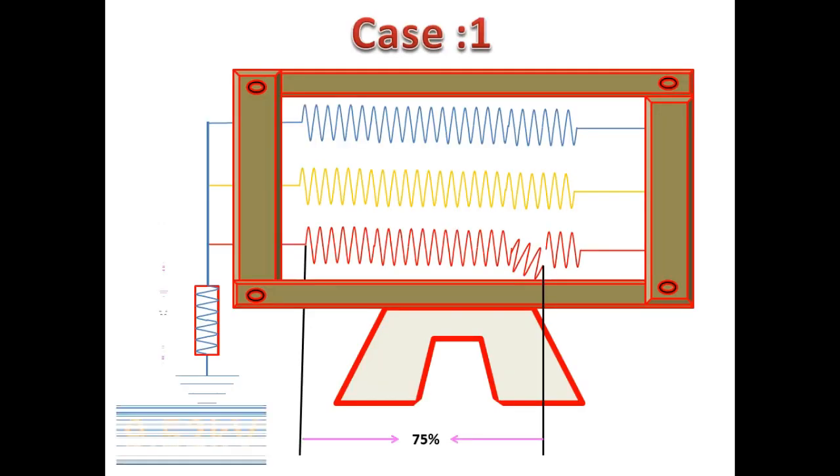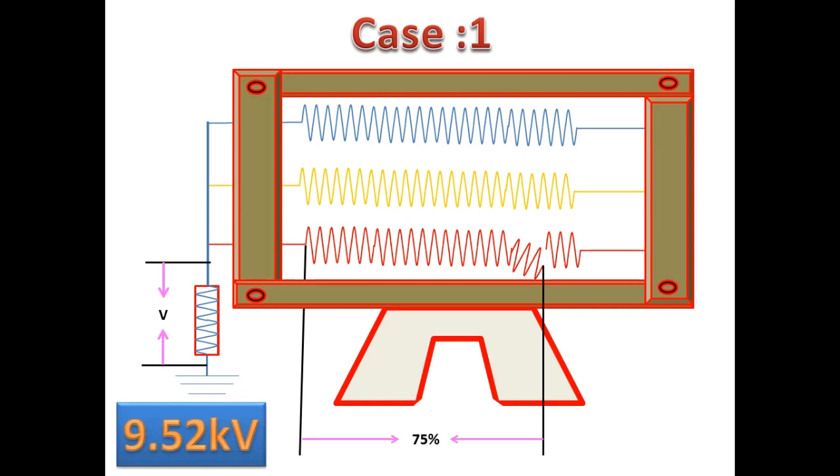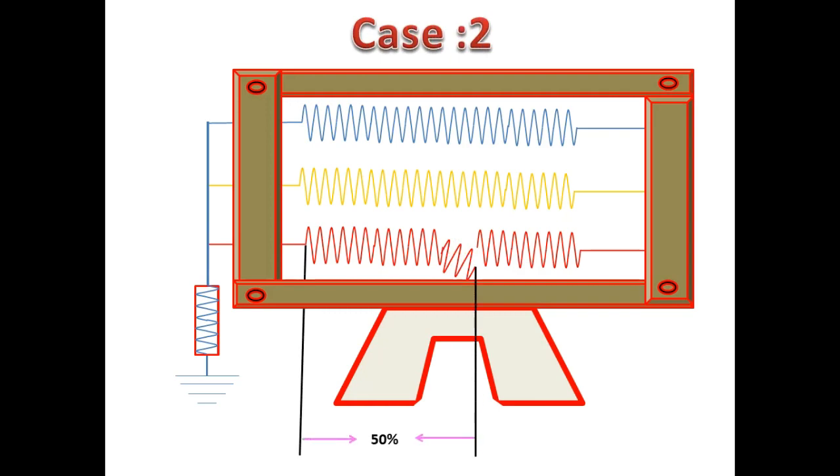Now we go for case 2. Let us consider that at 50% of the winding it got earth fault. Now what will be the voltage value across here?